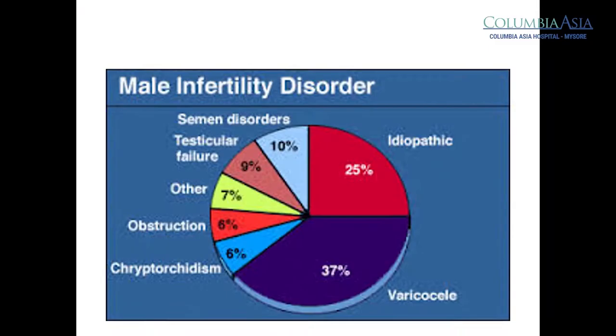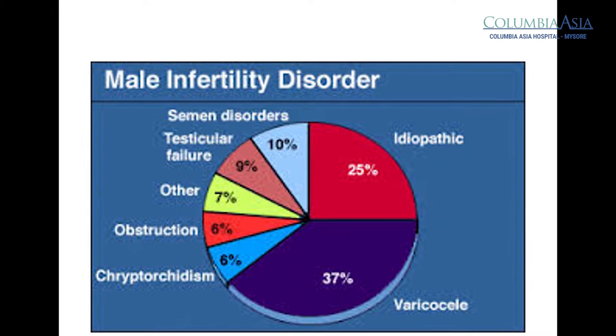If there is no improvement with medication, we do further tests like hormonal tests and also scanning of the testes to see what is the problem and why he is not improving. Once we confirm that there is a blockage in his seminal vesicle or in the duct which carries the semen, we advise them to undergo repair of the seminal vesicle or the ejaculatory duct to remove the blockage, and by removing the blockage they can produce sperms.